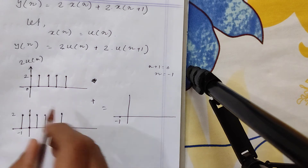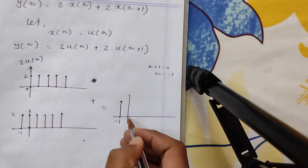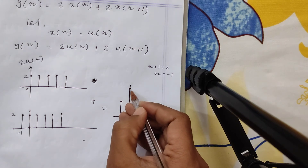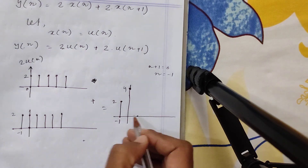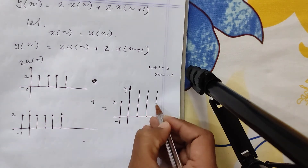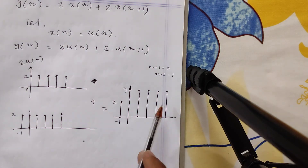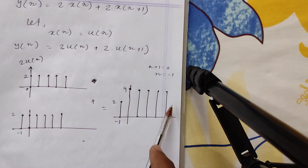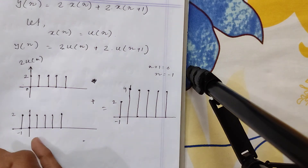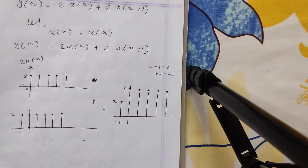At n=−1: y[−1] = 0 + 2 = 2. At n=0: y[0] = 2 + 2 = 4. At n=1: y[1] = 2 + 2 = 4. At n=2, 3, 4: all equal to 4. So the output is bounded — it is a bounded output. Since we have a bounded input and a bounded output, this is a stable system.